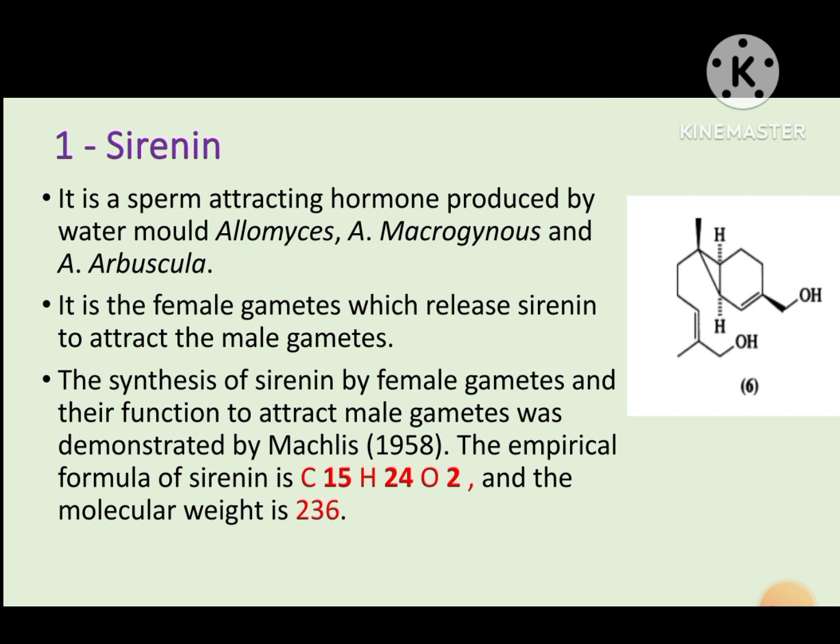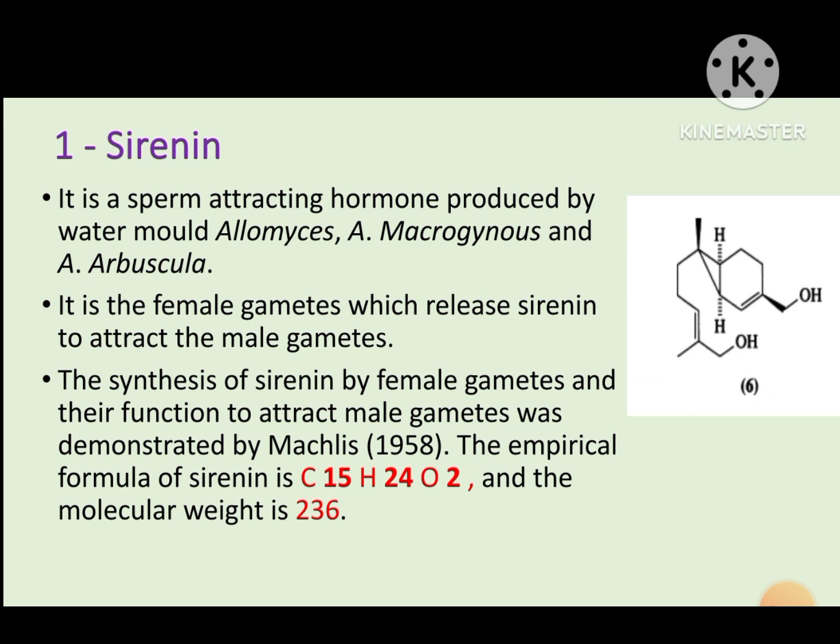First is sirenine. Sirenine is known as a sperm-attracting hormone. It was first obtained from the female hyphae of the species Allomyces macrogynus and Allomyces orbiculatus. Here is the chemical structure of sirenine. Sirenine is an oxygenated sesquiterpene.